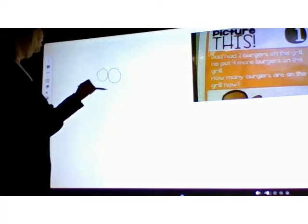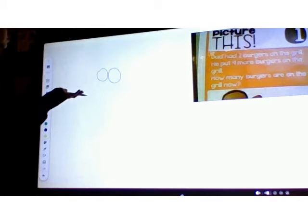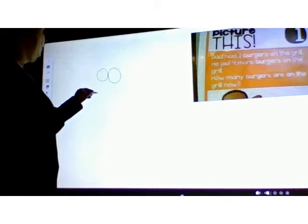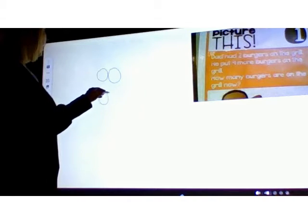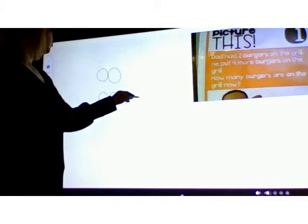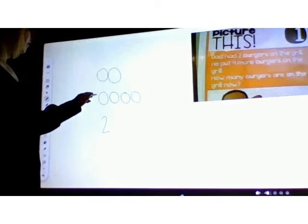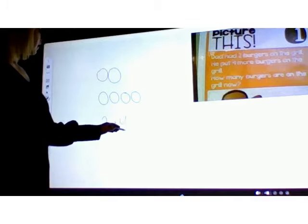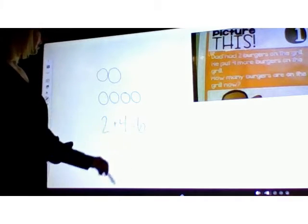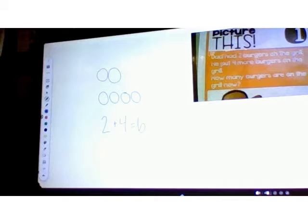So we are going to start off by drawing our circles, and we draw open circles in first grade in a row of five if we can. I'm going to show two burgers in the beginning, and then in the middle he added four more. Sometimes we like to leave a space so we can see the two parts of the story. Then we write our number sentence, so we started off with two burgers and then dad added four more and that equals six.